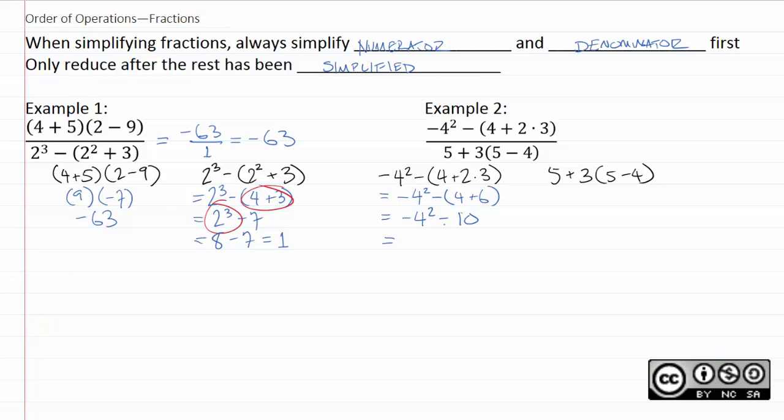Then, here, remember, exponents only affect whatever they directly touch. That 2 is touching the 4, but this 2 has nothing to do with this negative here. That means you just square the 4 and leave the negative off to the side. You could think of it as negative 1 times 4 squared.